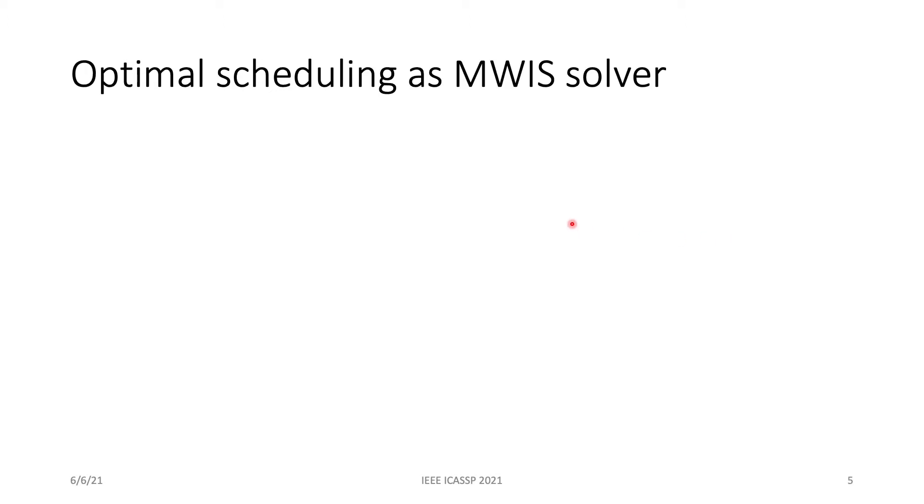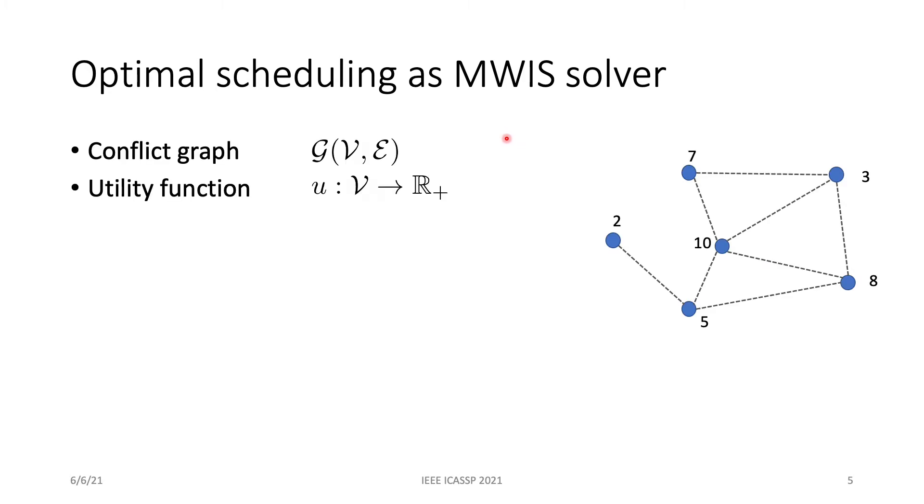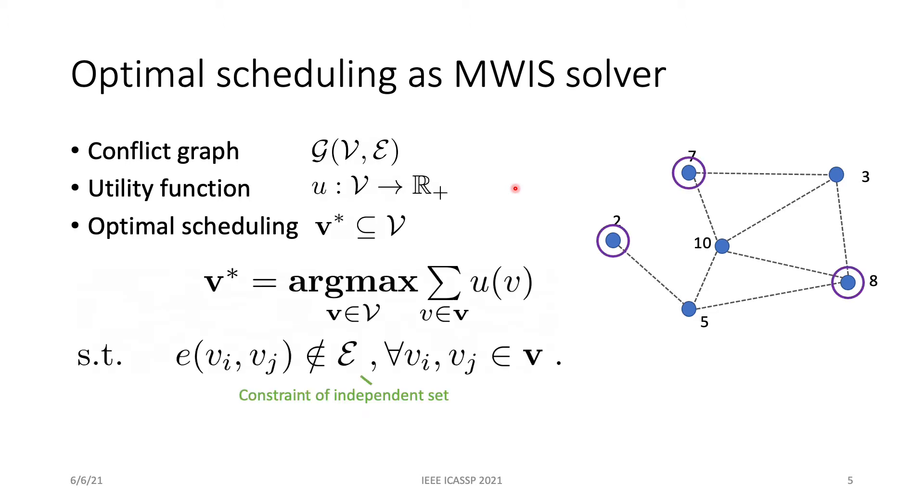Having introduced the conflict graph, we now can define our optimal scheduler. Given a conflict graph G and the utility function U, the optimal scheduling is a subset of vertices on the conflict graph that maximizes the total utility subject to the independent set constraint. The independent set is a set of vertices that there are no edges between them. So, v3 is the maximum weighted independent set, or MWIS in short.